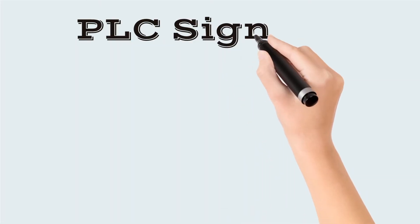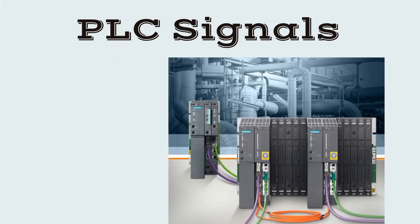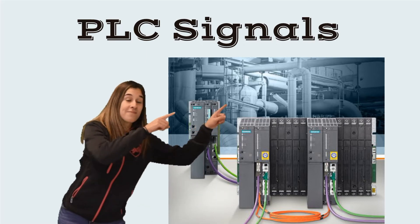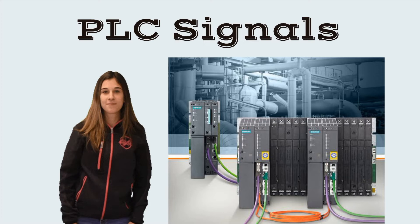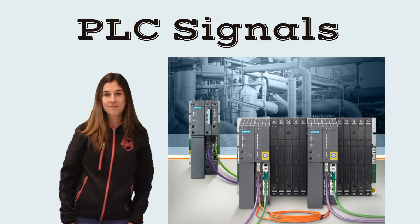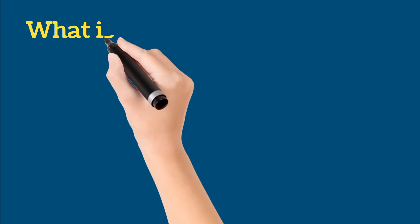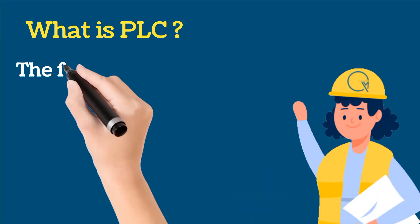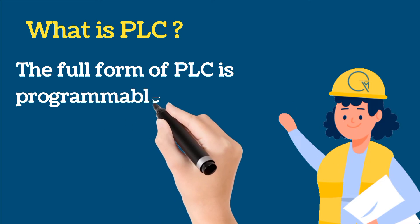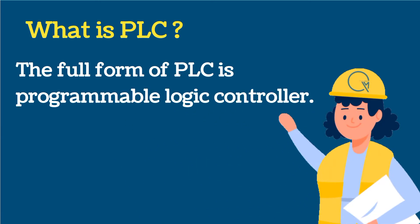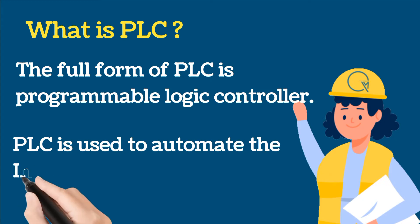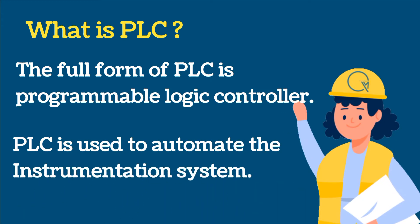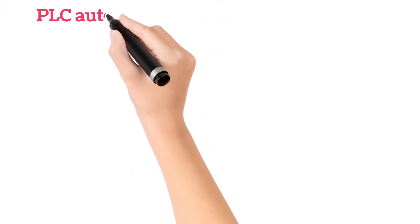In today's video we are going to discuss PLC signals. PLC signals are very important in instrumentation. The full form of PLC is Programmable Logic Controller — this is also asked in interviews. PLC is used to automate the instrumentation system, where processes and machines are controlled automatically.